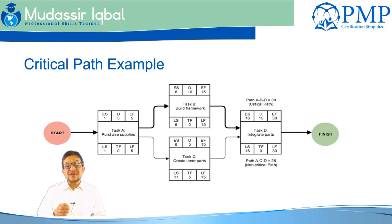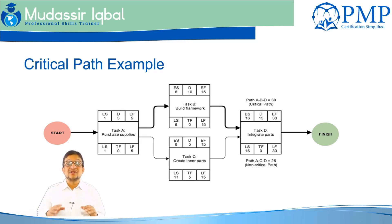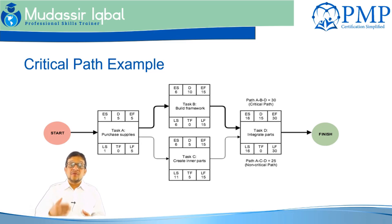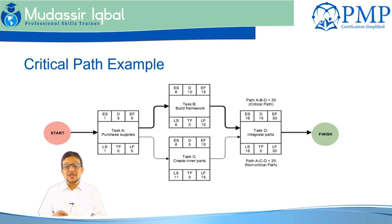The critical path is used to determine which activities have the least amount of float — typically zero float. We might have some negative float on a critical path, but if we have float on every path it means we can delay the project for some time. We may have a constraint such as 'not start earlier than' for some activity, which means if there is float in between, we can delay that activity a little bit to minimize the project timeline.